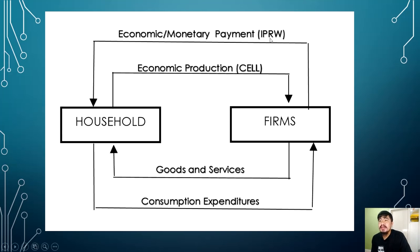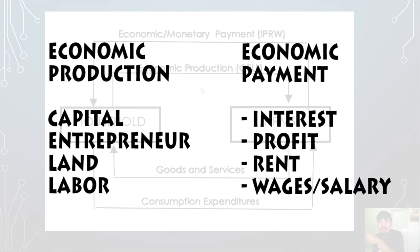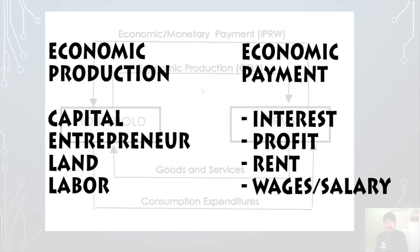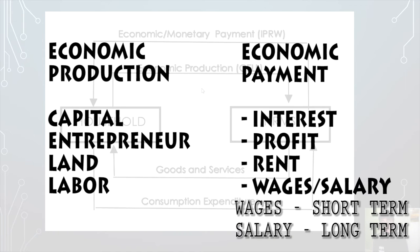The abbreviation for economic payment is IPWR: Interest, Profit, Wages, and Rent. These co-align with CELL. For capital, what comes back to you is interest — the generated money of capital. For entrepreneur, what comes back is profit. Interest is when money works for you; profit is when a person manages or runs the business. For land, we call it rent. For labor — when you work — what you receive is salary or wages, with wages being short-term.